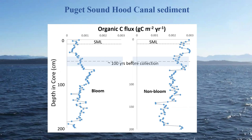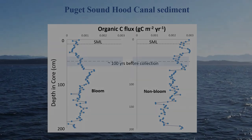Looking over the whole time series all the way down to the bottom of the core, there's been a fair bit of variability in the bloom-type flux, but the non-bloom just seems to be increasing over time. It's uncertain whether that definitively indicates a change in Hood Canal from larger phytoplankton to smaller, but it would be consistent.